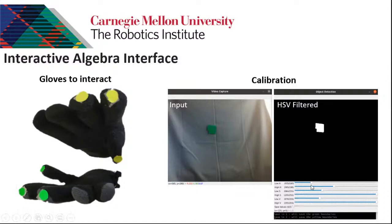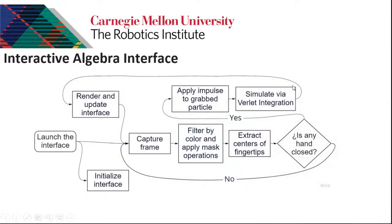We created an interactive algebraic interface called AlgaeGloves. The user puts on gloves with colored circles on fingertips. First, you calibrate the interface based on color filtering - hue, saturation, and value. Each student can use their own colors and interact with the interface by saving calibration values.